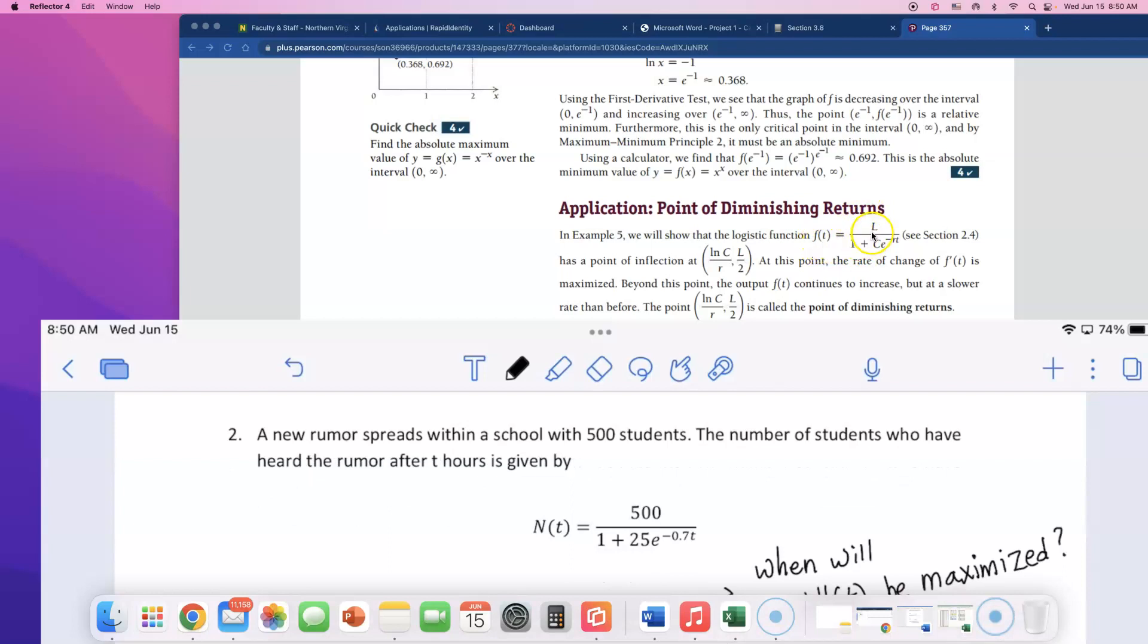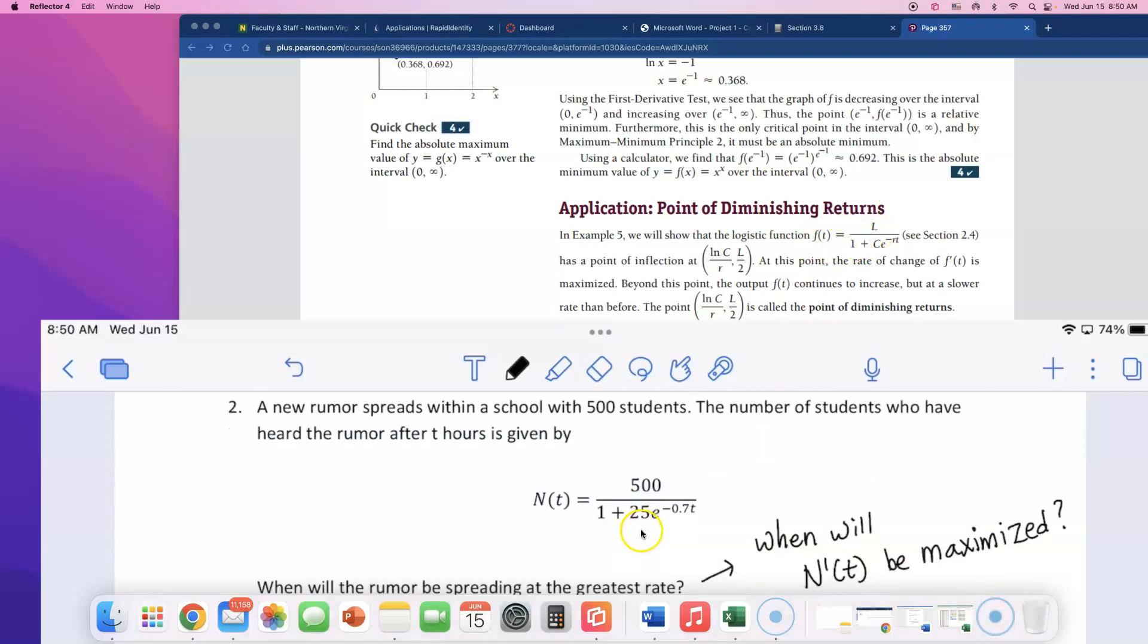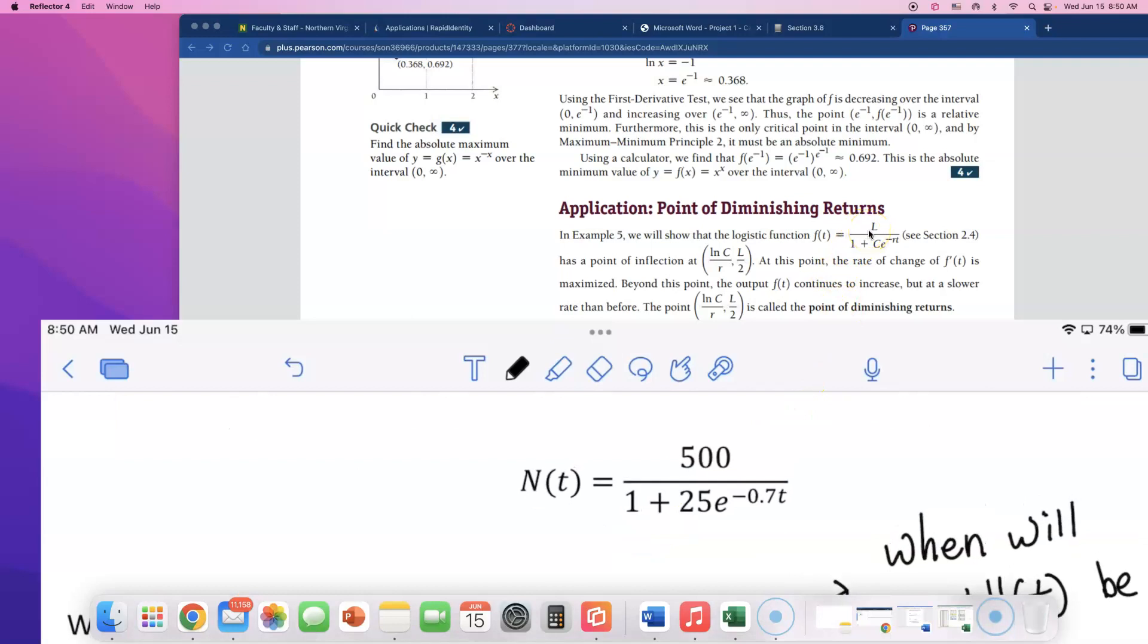F of t equals L over... So in our case, what is L? The numerator. I'll write those down. We will be using some of these pieces to solve this. So L is 500. We have 1 plus C, and can you see that our c value is 25? So write down capital C is 25. And e raised to the negative rt power. What's r? r is 0.7. So we wrote these down.